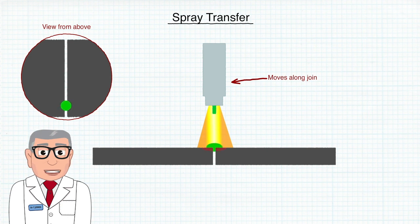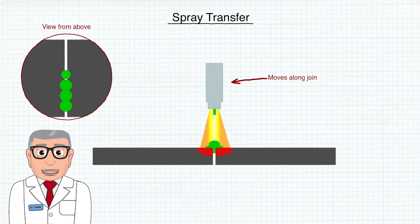The arc itself is smooth, stable, and stiff, and the weld bead has a nice appearance and a good wash into the sides. A large amount of heat is involved, which creates a large weld pool with good penetration, but this can make it difficult to control the process.